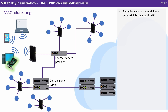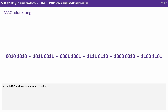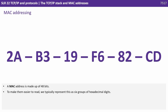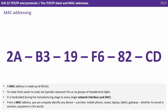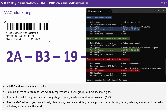Every device on a network has a network interface card or NIC. Every NIC has a media access control or MAC address which is used to route frames on a local area network. A MAC address is made up of 48 bits; to make them easier to read we typically represent this as six groups of hexadecimal digits. It is hard-coded during the manufacturing stage to every single network interface card.